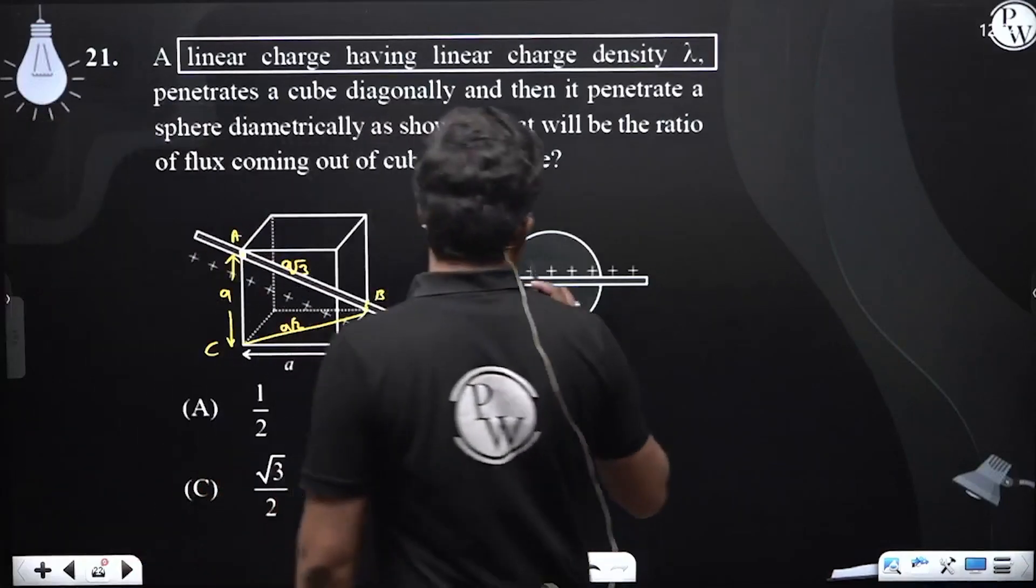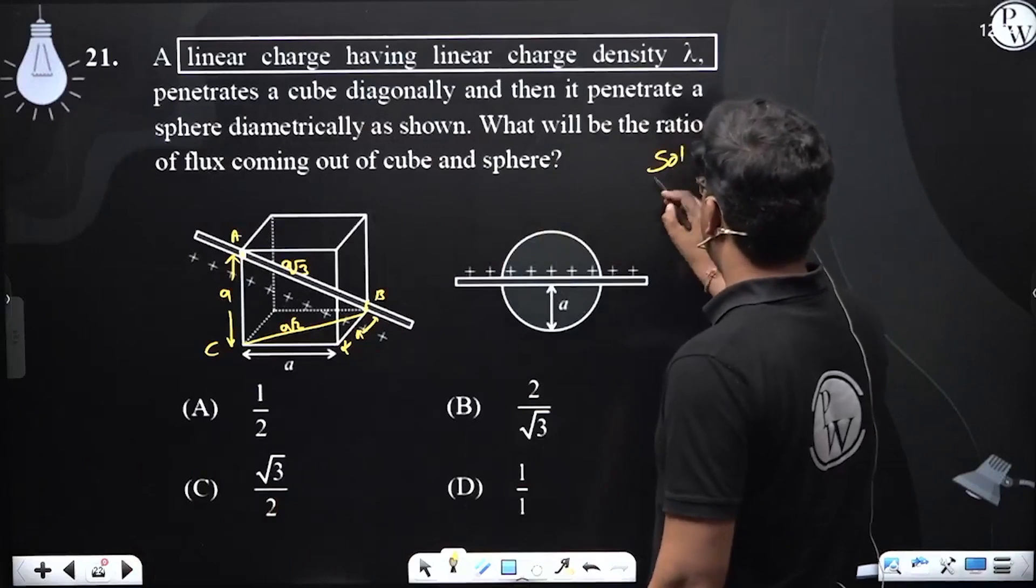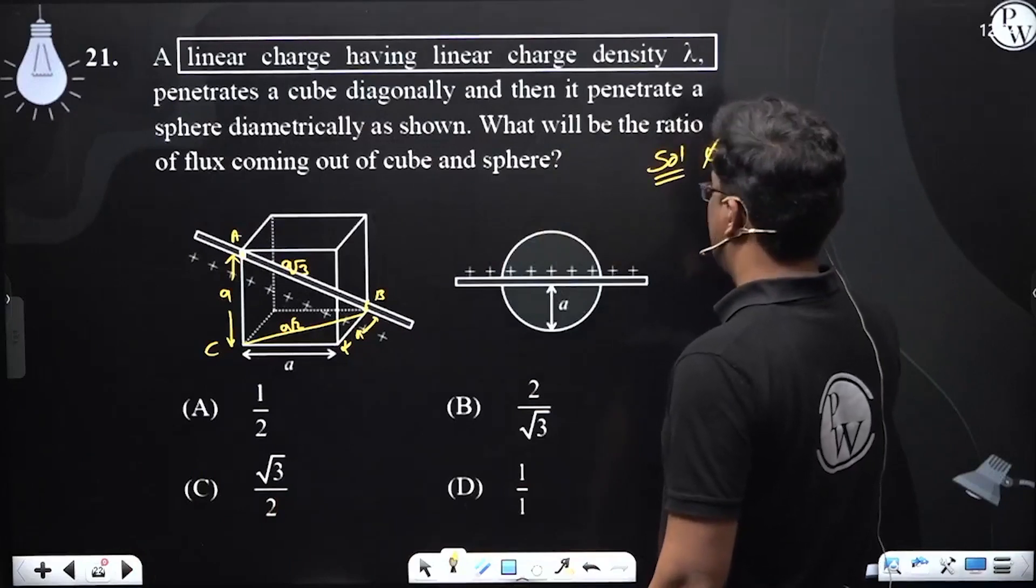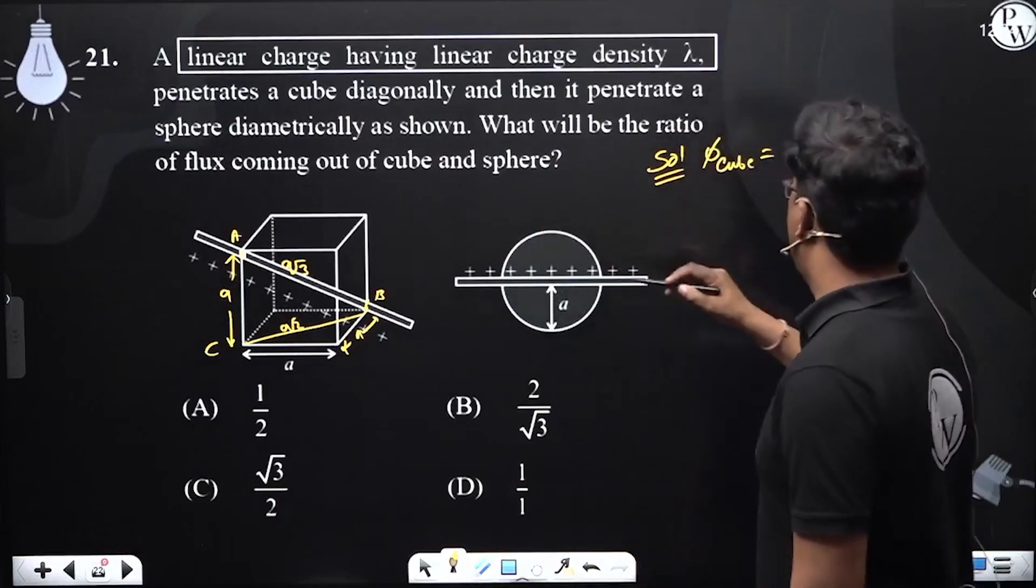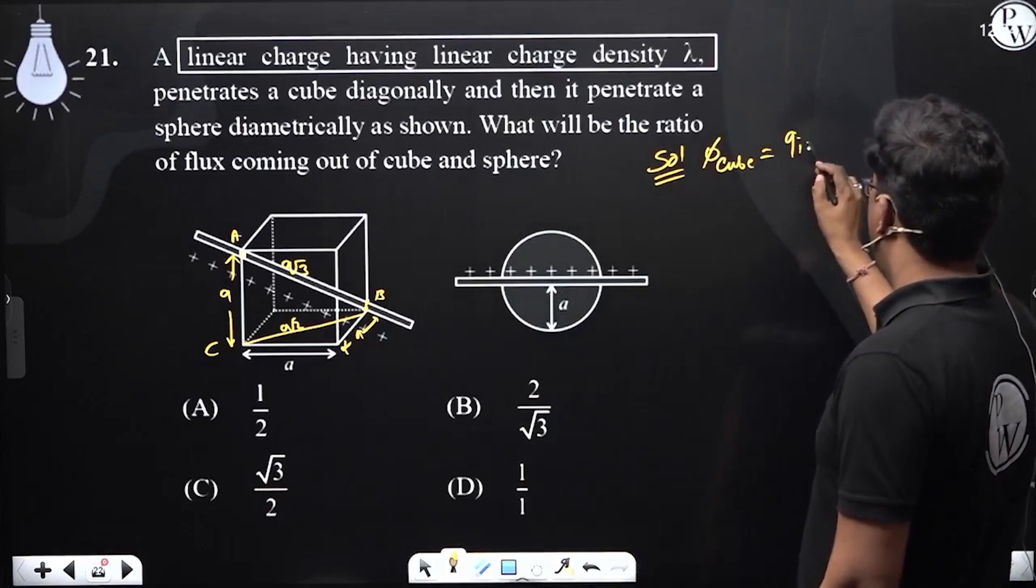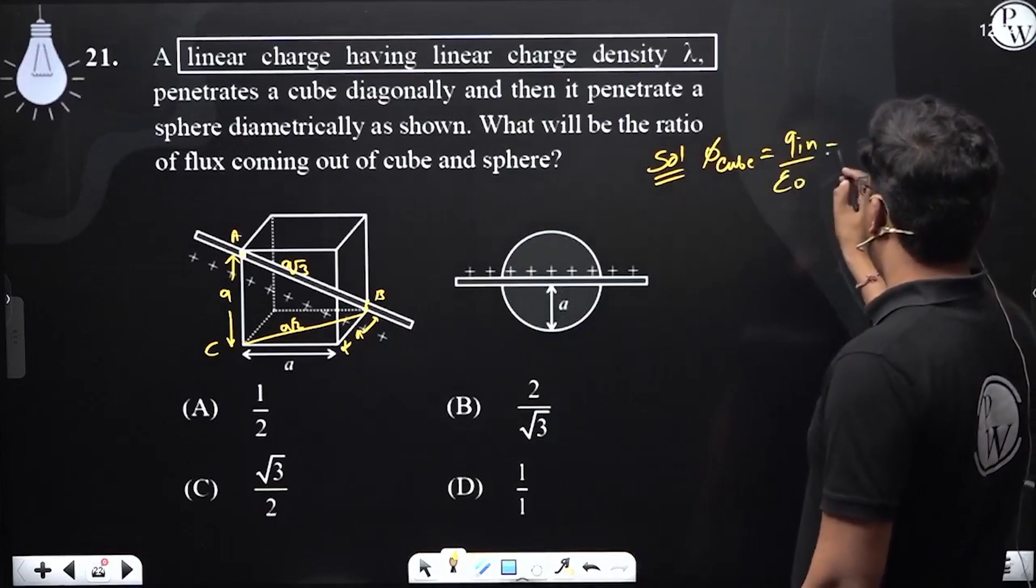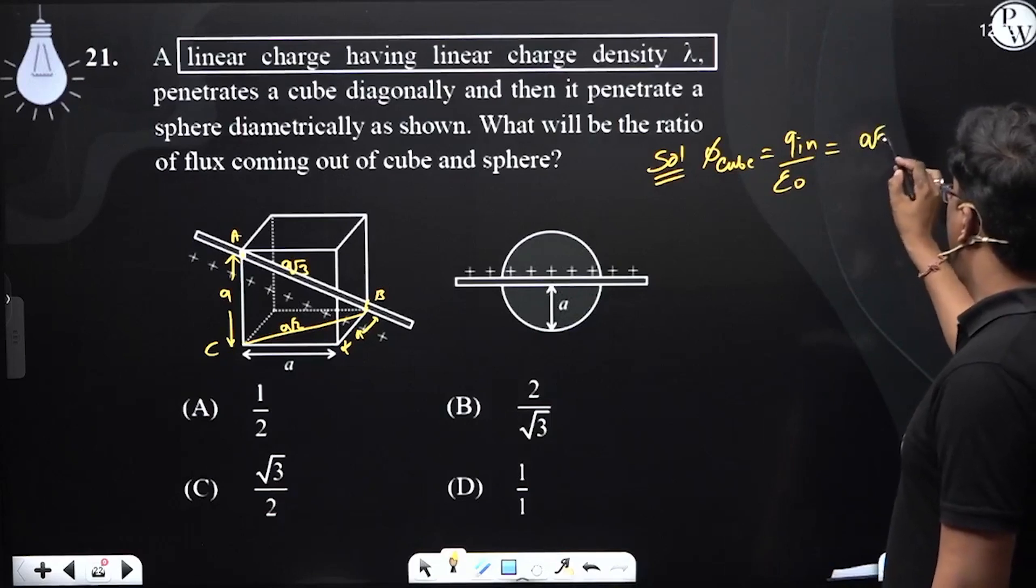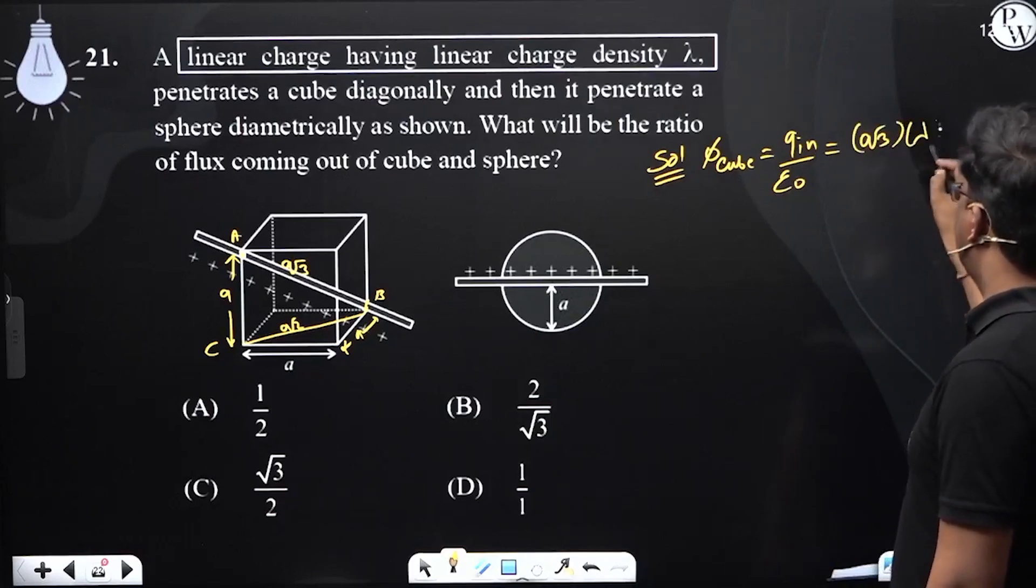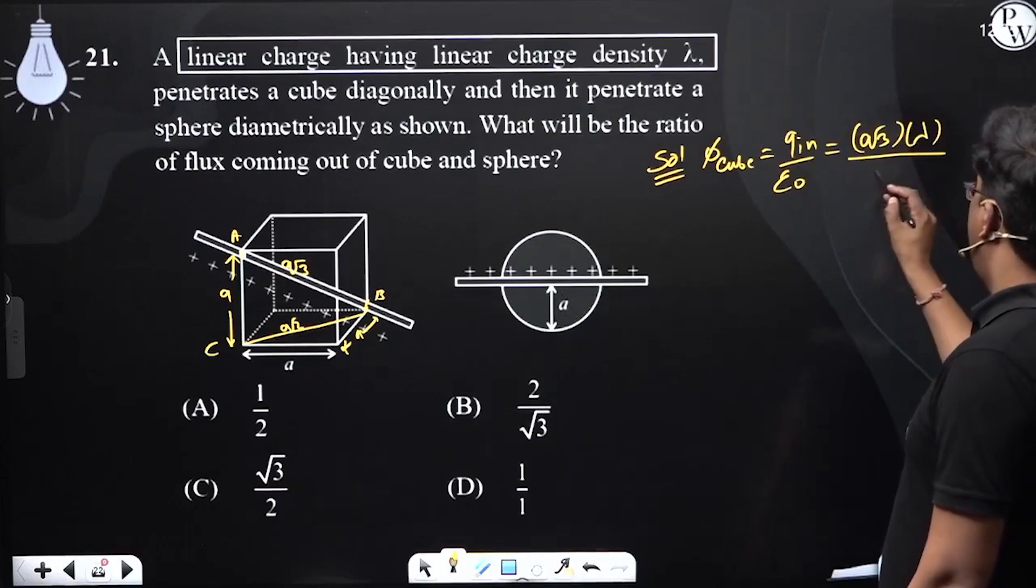This is a root 3. So flux, we will talk about the solution here. Flux q to cube will be q enclosed divided by epsilon 0. And how much will it be? A root 3 length into charge density lambda divided by epsilon 0.